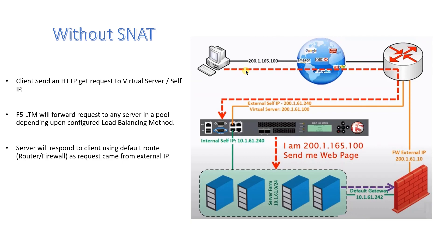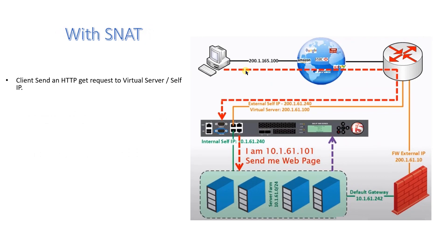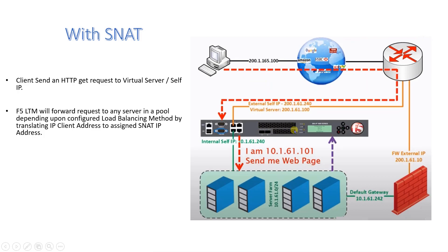To overcome these issues, SNAT needs to be configured in the F5 BIG-IP LTM appliance. When the client sends an HTTP GET request to the virtual or self-IP, the F5 LTM forwards the request to one of the servers in the pool based on the configured load balancing method. With SNAT configured, the source IP address is translated — the client address is translated to the assigned SNAT IP.